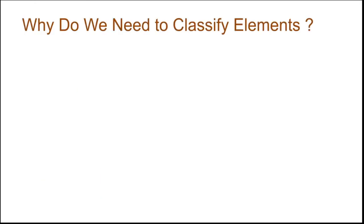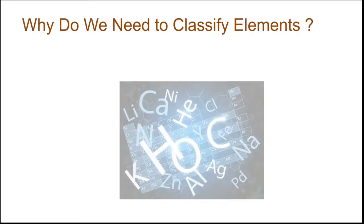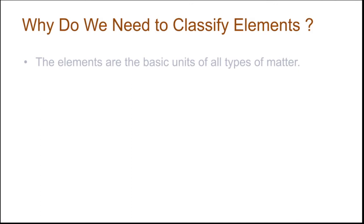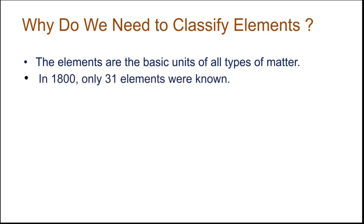First, let us look into why do we need to classify elements. Before the 18th century, only a few elements were known and it was easy to study and remember their properties. The elements are the basic units of all types of matter. In 1800, only 31 elements were known, and in 1865, the number of identified elements was 63.